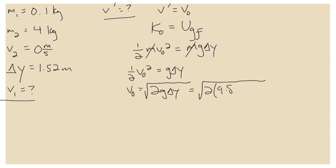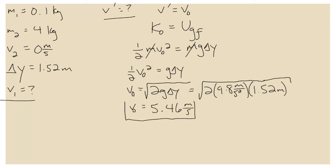Plugging in numbers: V0 = √(2 × 9.8 m/s² × 1.52 m). When you do that math and take the square root, you get 5.46 meters per second. That's if you used 1.52 meters. Some of you got 5.44 m/s because you used 1.51 meters — either way, there's experimental error and that answer is good enough.